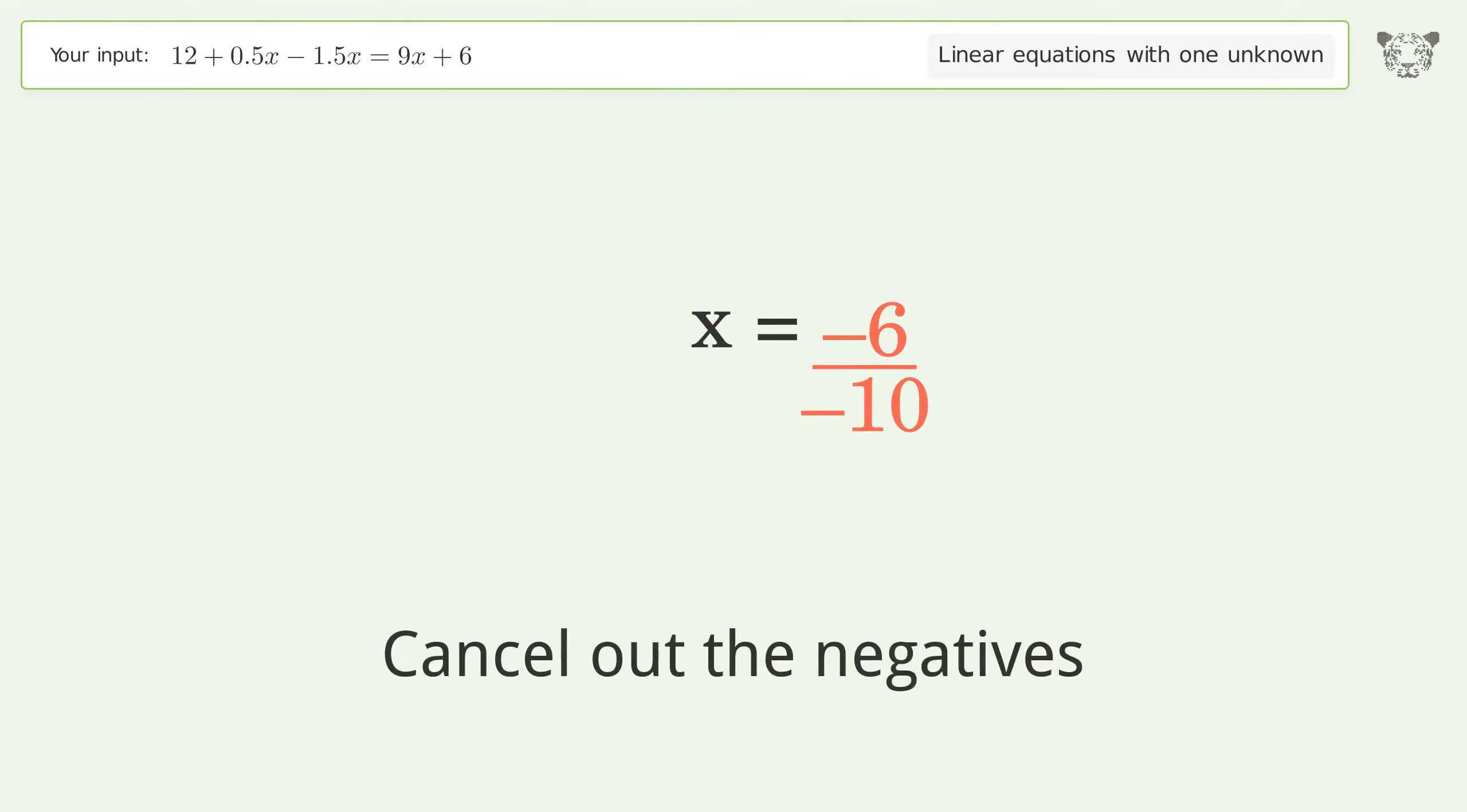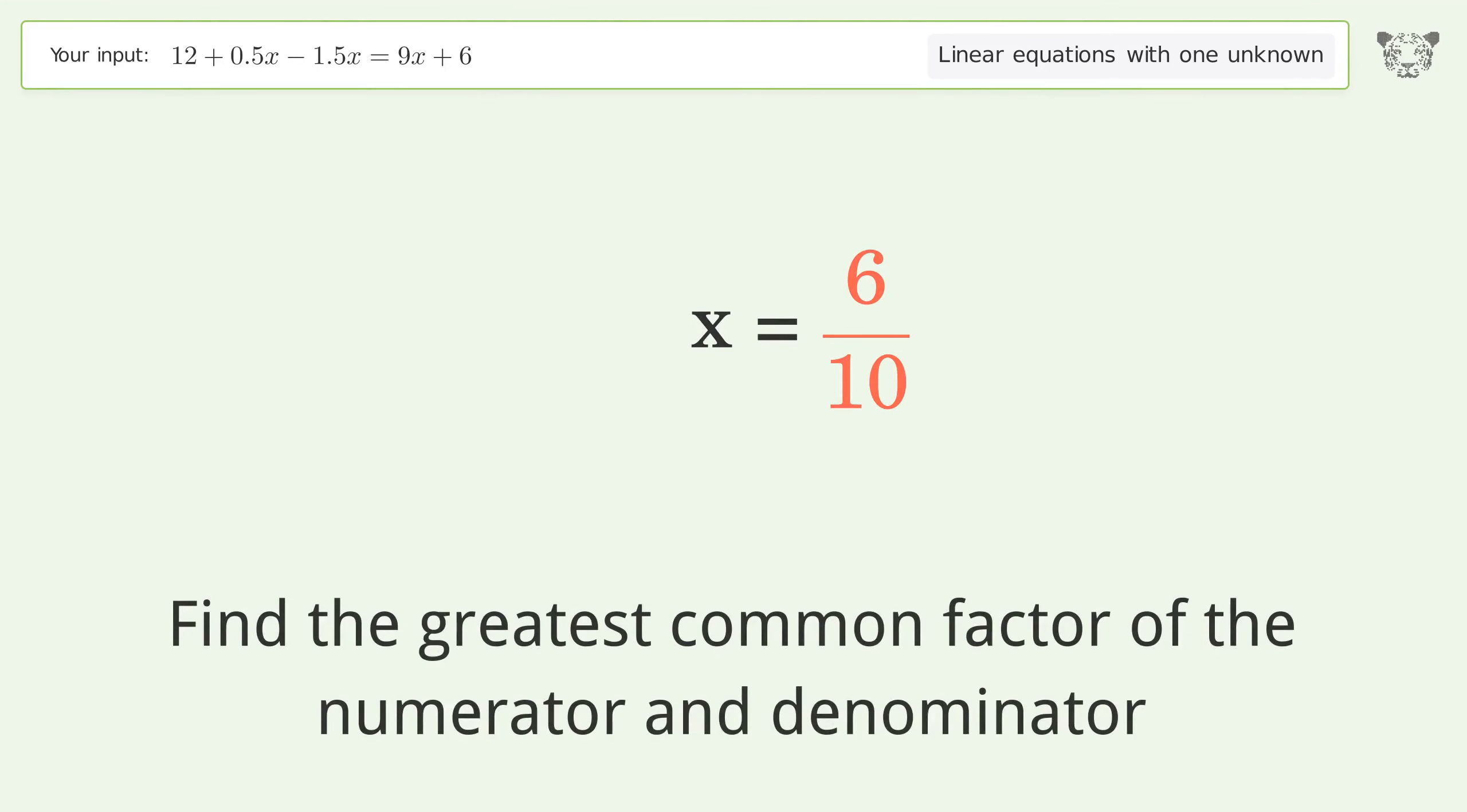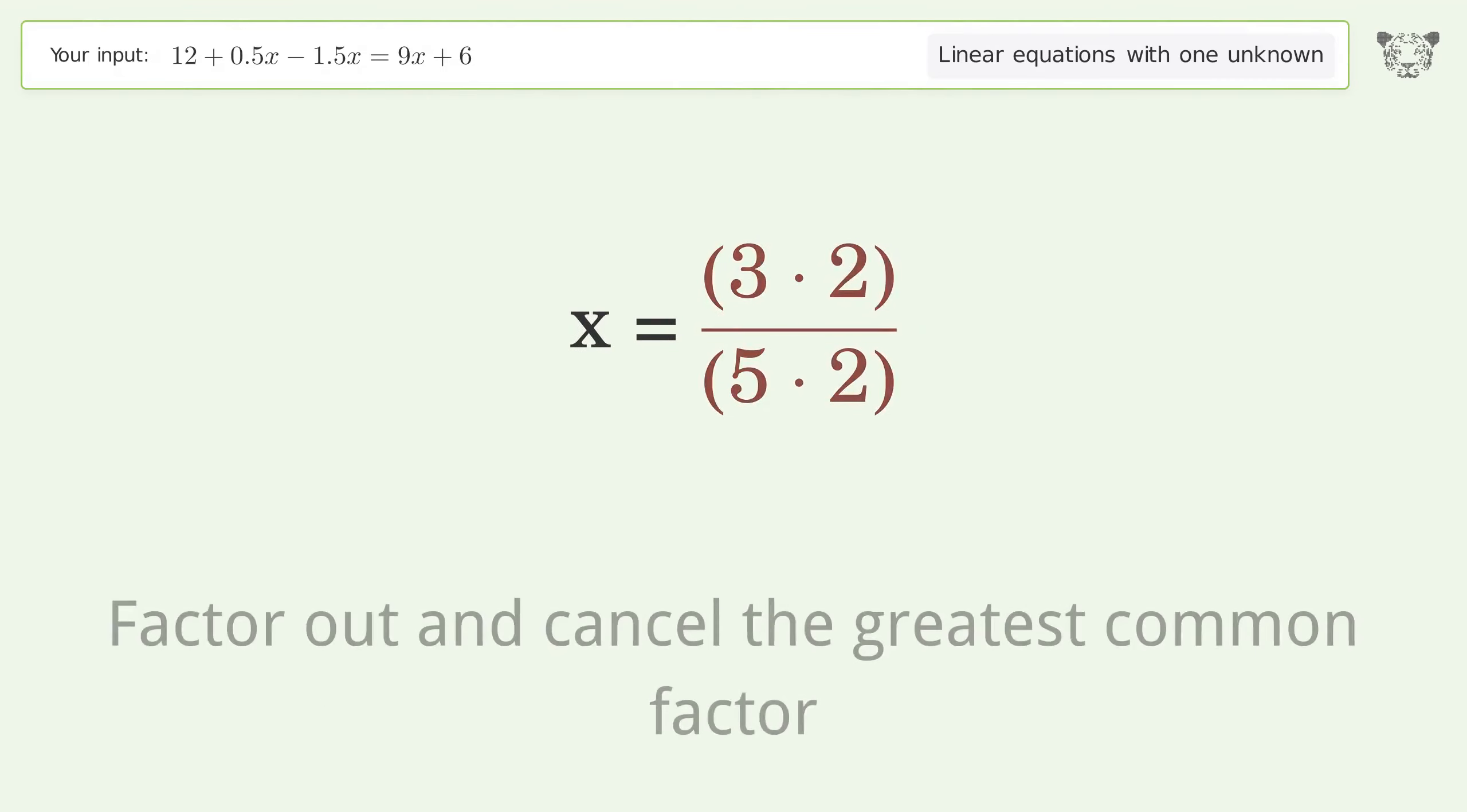Cancel out the negatives. Find the greatest common factor of the numerator and denominator. Factor out and cancel the greatest common factor.